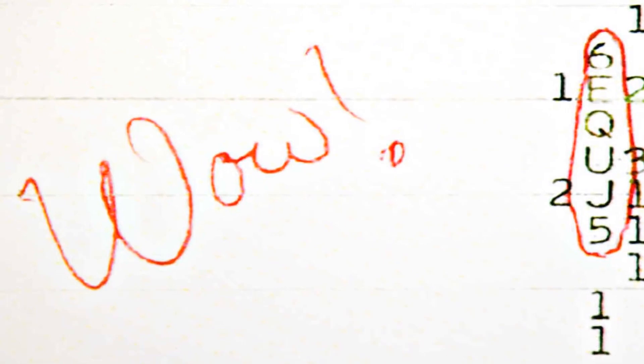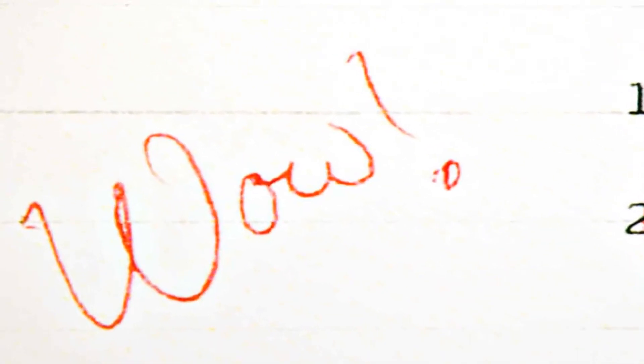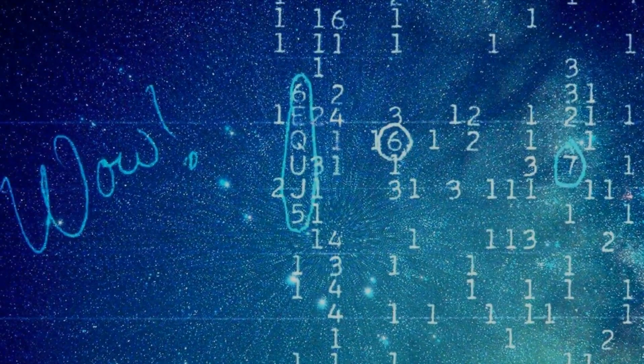It lasted for 72 seconds and was so strong that the computer printed out the word WOW in the margin of the data printout. The signal was a narrow-band radio signal that appeared to come from the direction of the constellation Sagittarius, and it had all the hallmarks of a signal that could be sent by an intelligent alien civilization.